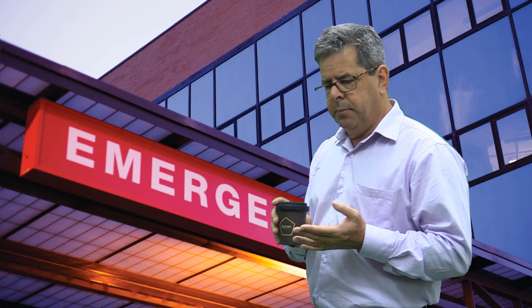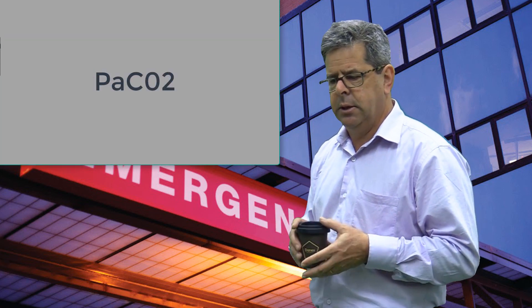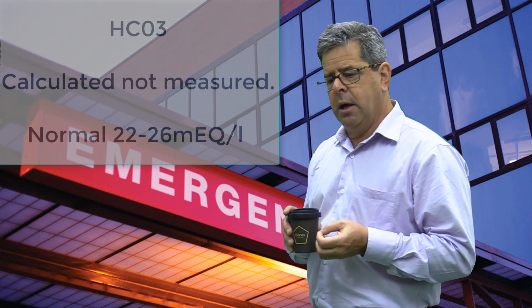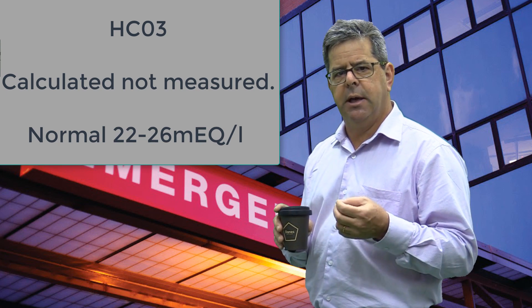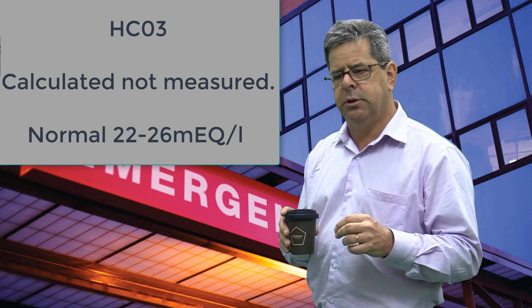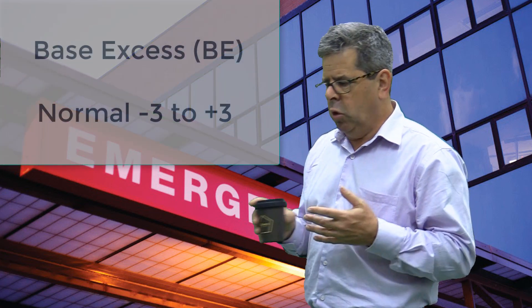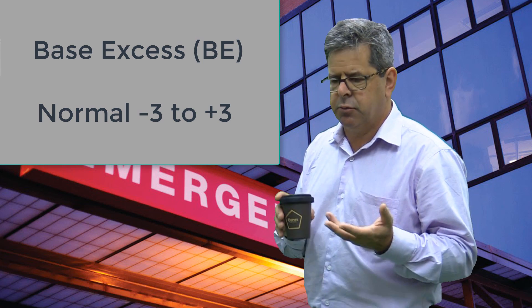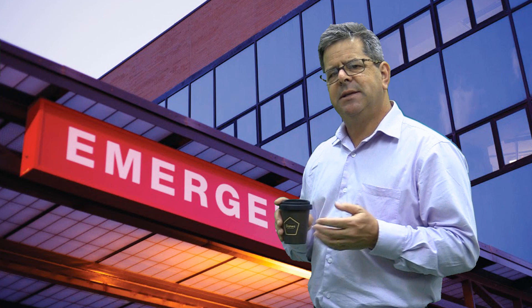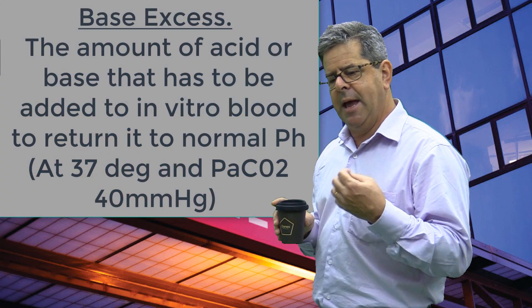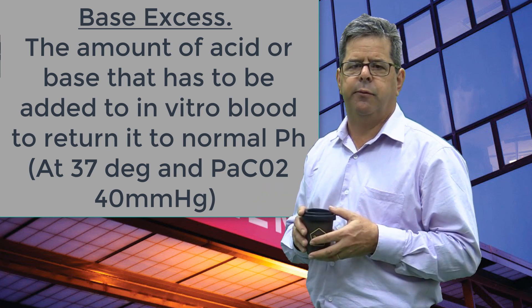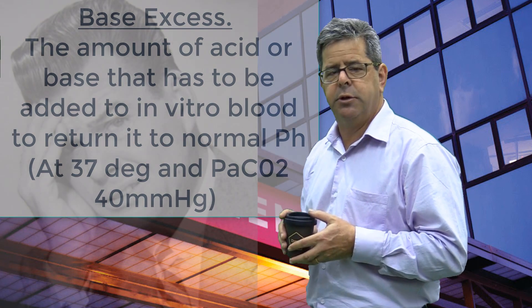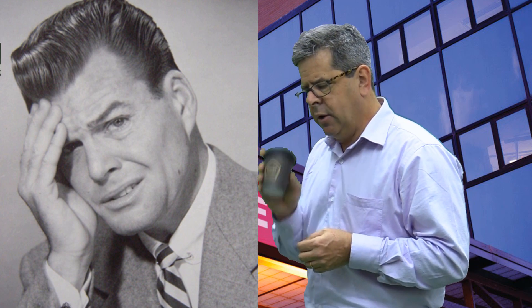We also measure PaCO2, the partial pressure of carbon dioxide, and bicarbonate — which is actually calculated using the pH and CO2, so it's a calculated, not directly measured number. We also have base excess, normal between about -3 and +3. Base excess is the amount of base or acid you'd need to add to bring the pH back to normal at a PaCO2 of 40 mmHg and temperature of 37°C.